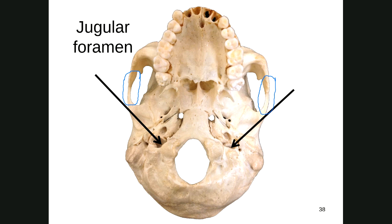On the inferior view, you can see the foramen magnum — the big hole. Circling further out, those are the occipital condyles. Moving further lateral, you'll see these large holes — those are called the jugular foramen, named after the jugular vein. The jugular vein exits out of that foramen.